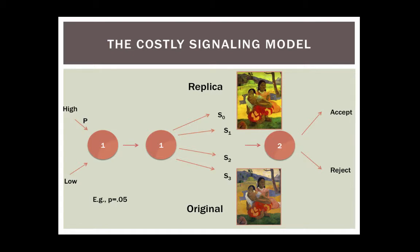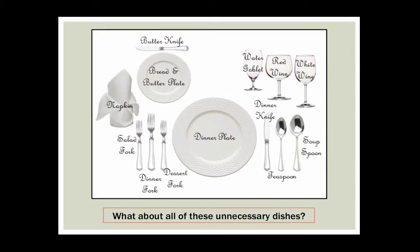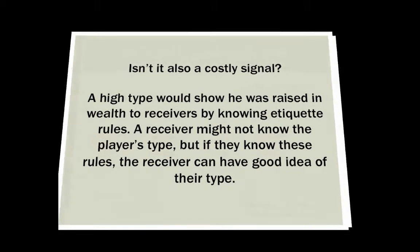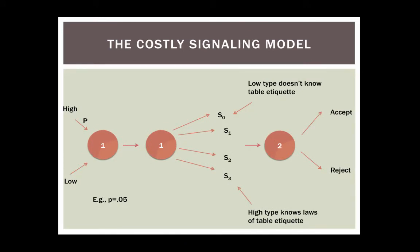We can see the costly signaling model in action. It is a Nash equilibrium to signal one's type by buying original, expensive art. But since low-types could afford a replica, it's not an equilibrium to buy cheap replicas. What about all of these unnecessary dishes? In order to tackle this, we have to look at the origins of European etiquette. One wouldn't know how to use all of these forks and knives and in what order unless they grew up in a royal or rich household. Isn't this also a costly signal? A high-type would show he was raised in wealth by knowing etiquette rules.